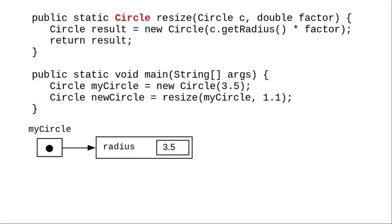Here's the rewrite of our resize code to be a method that returns a circle object. As before, we create a circle in main, and as before, parameter C is a copy of the reference to myCircle.